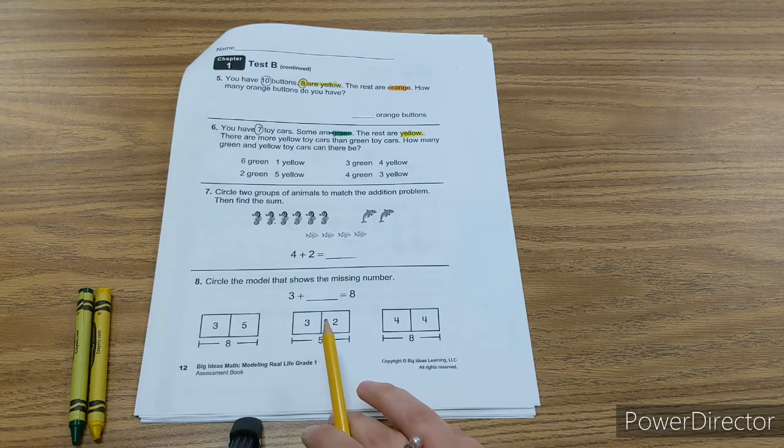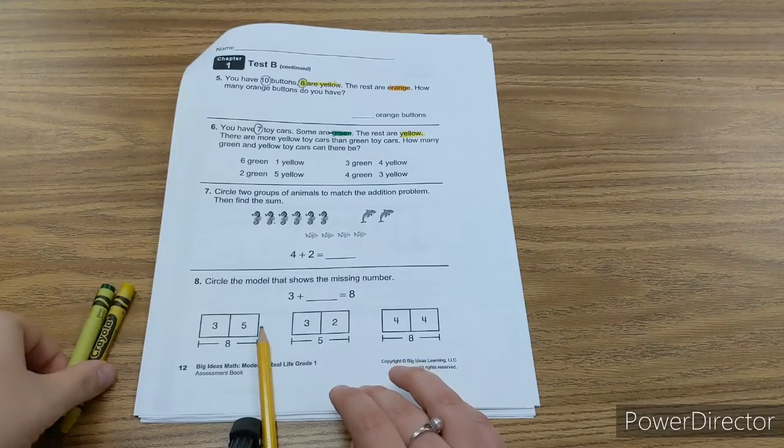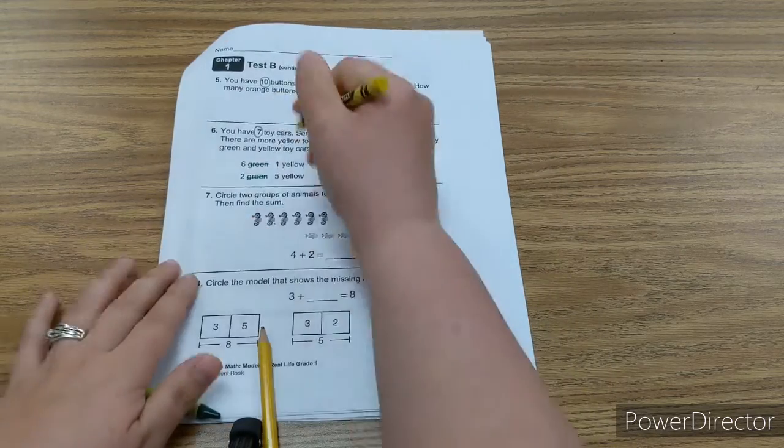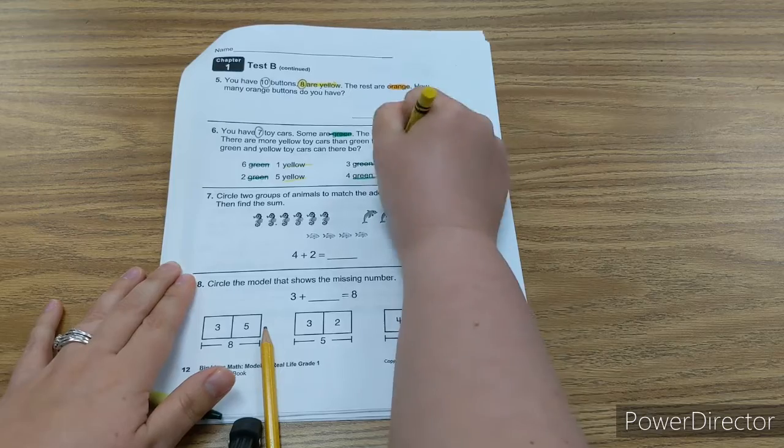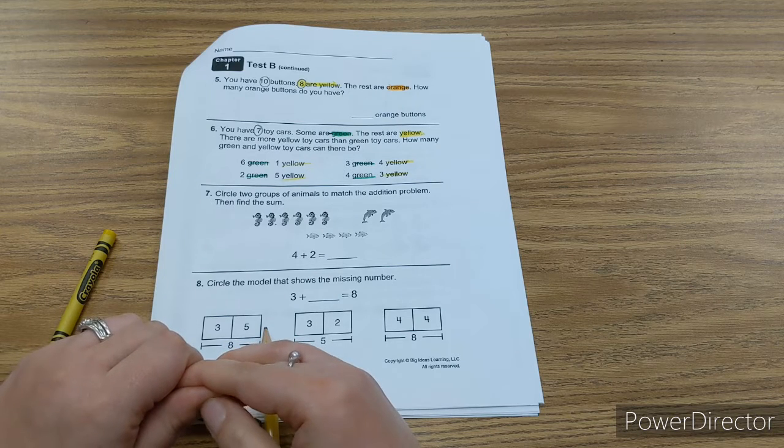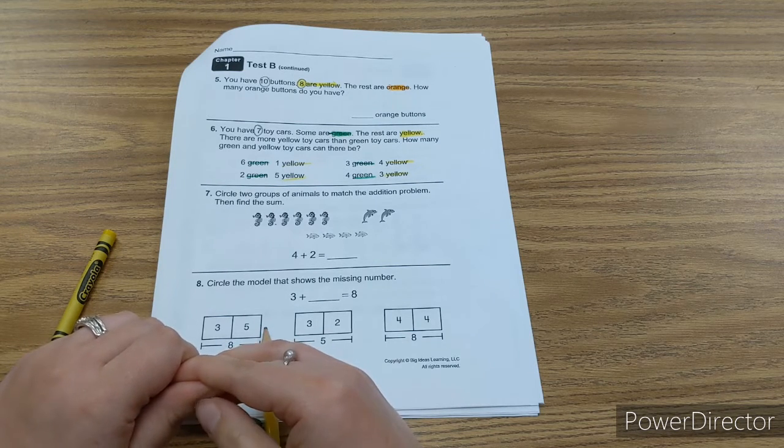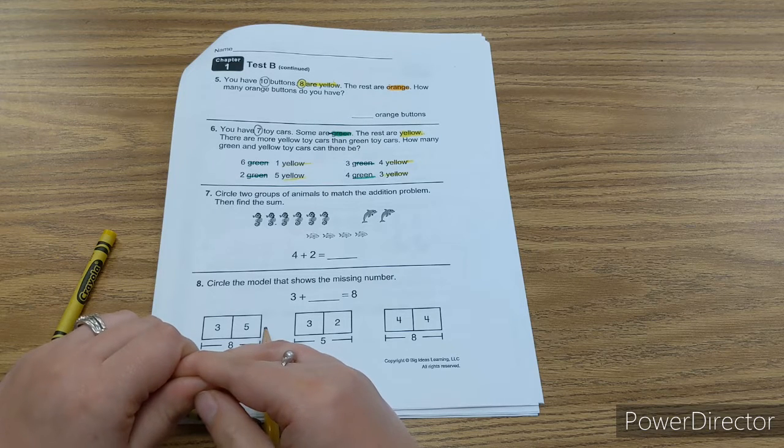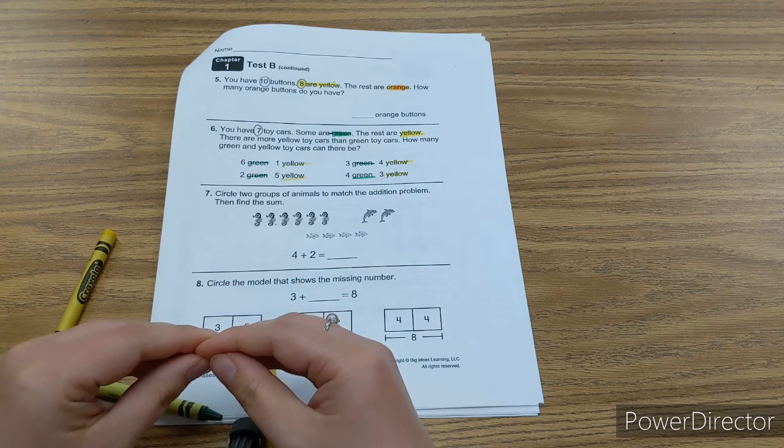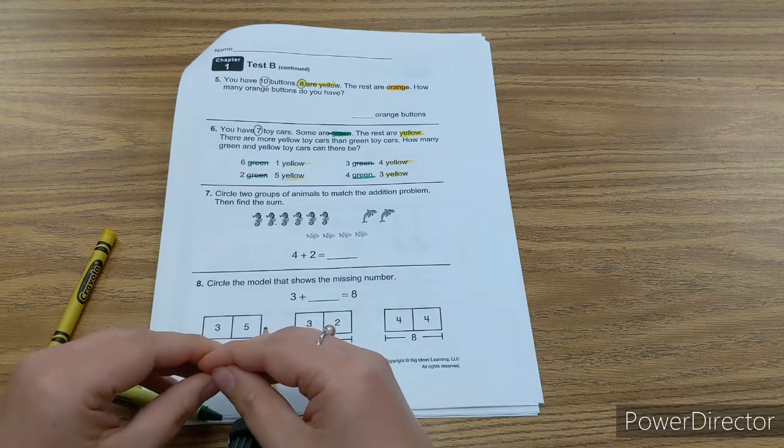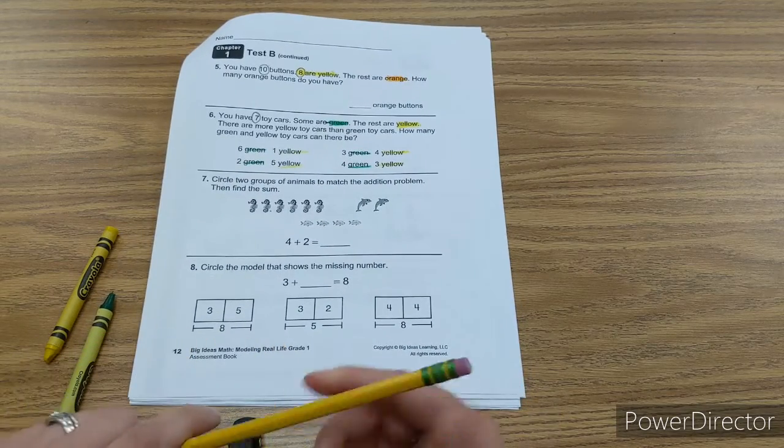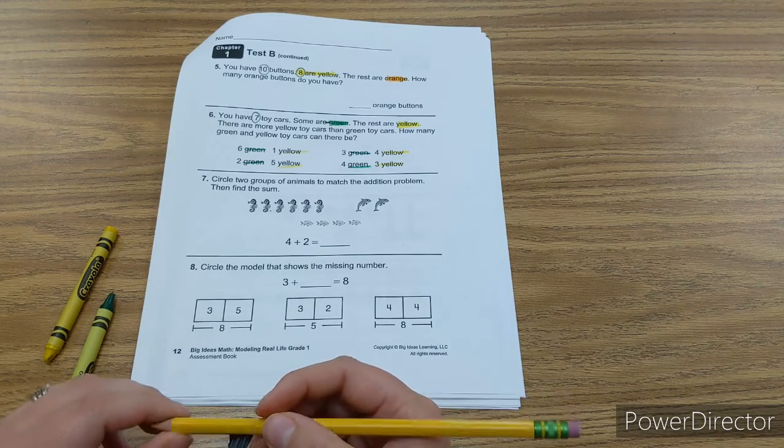You're going to circle your answer, and then you're going to cross out the ones that are wrong. So I'm just going to put my greens and my yellows. You're already going to be able to cross out anything that shows more green cars than yellow cars, because you want more yellow cars. So if the yellow number is smaller than the green number, you can already cross that out. Push pause and then push play when you are ready.